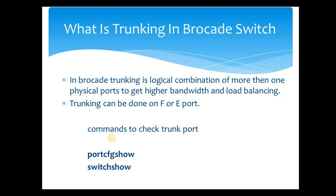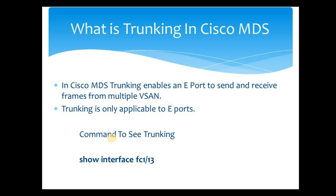Now let us see what trunking means in Cisco MDS. In Cisco MDS it has a completely different meaning — trunking enables an E port to send and receive frames from multiple vSAN. vSAN is basically a way to segregate the entire hardware architecture into logical SAN networks. You create a vSAN, assign some ports to it, create another vSAN, assign other ports to it, and communication will not happen between those two groups of ports. If you want to allow traffic between ports belonging to two different vSANs, then you need to enable trunking in Cisco MDS.